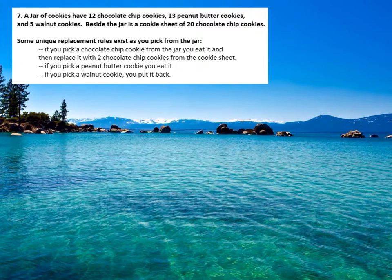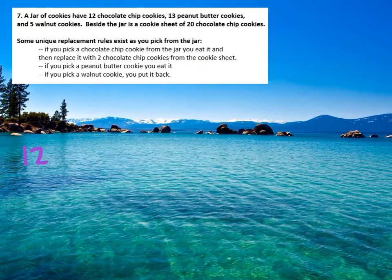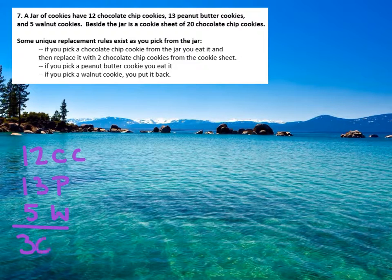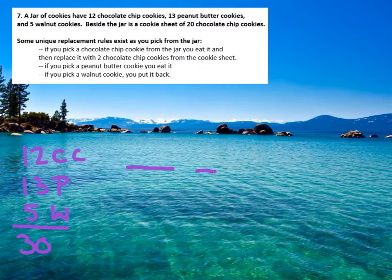Let me walk you through the funny replacement rules here. First, let's explain what's going on. We've got 12 chocolate chip cookies, 13 peanut butter cookies, and 5 walnut cookies, for a total of 30 cookies. Now you're going to pick 2 cookies, and there are going to be some rules, so let's look at these rules.